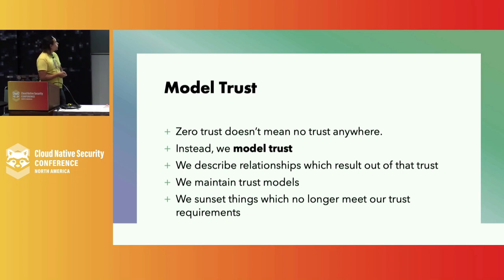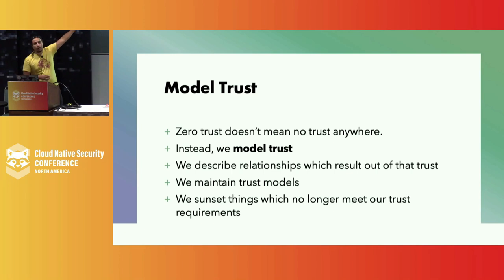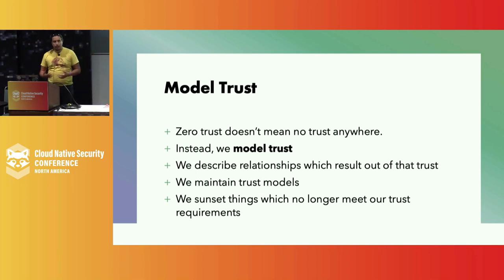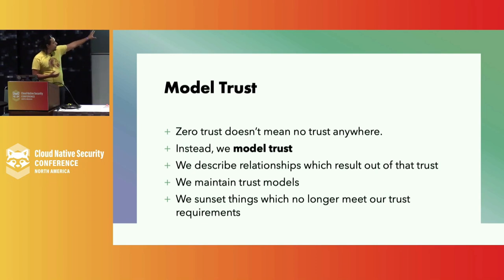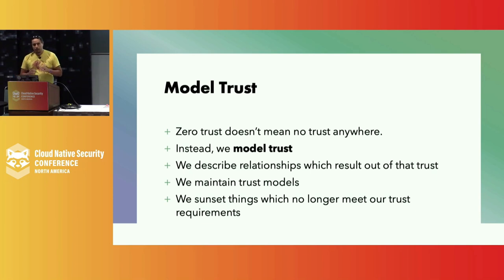One of the things we want to consider is what we actually model as part of our policies and identities. At the root of it all is trust. Even though we call it zero trust, what we actually want is to establish what we can and should trust. If we can model trust, we're able to describe relationships and how much we want to trust something — how much suspicion do I have of a given system, and is that over or under my threshold? If we maintain these models of trust over time, that also gives us the ability to sunset the things that would no longer meet our trust.